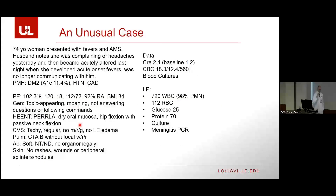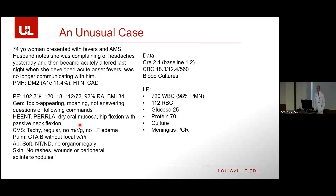I want to start with a case I encountered as a fourth-year medical student, and I didn't realize at the time that this would become a theme in my research much later. This starts with a 74-year-old woman presenting with fevers and altered mental status. Her husband notes she was complaining of a little bit of headache yesterday but was otherwise fine, and then last night she became acutely altered with acute onset of fevers, to the point she was no longer communicating with him. She has a past medical history of type 2 diabetes with a hemoglobin A1c of 11.4%, hypertension, and coronary artery disease.